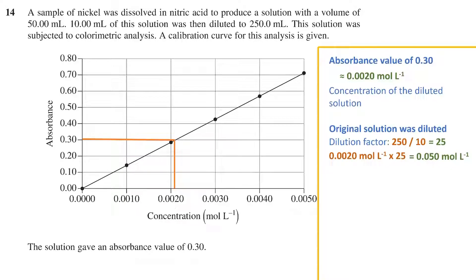The original solution was 15 milliliters. So to find the total number of moles of nickel in the sample, we multiply the volume, 0.05 liters, by the concentration, 0.05 moles per liter, giving us 0.0025 moles. We now have what we need.